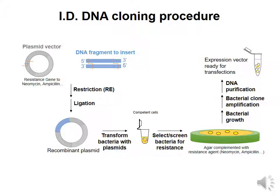After that, we transform bacteria with the resulting plasmids and plate those bacteria onto an agar plate complemented with a resistant antibiotic. Depending on the resistance gene in the plasmid you use, you will use a different antibiotic.